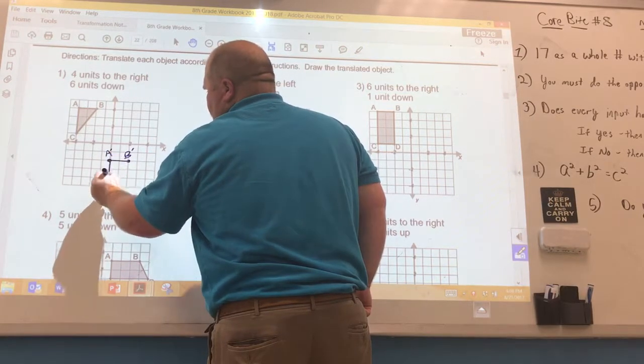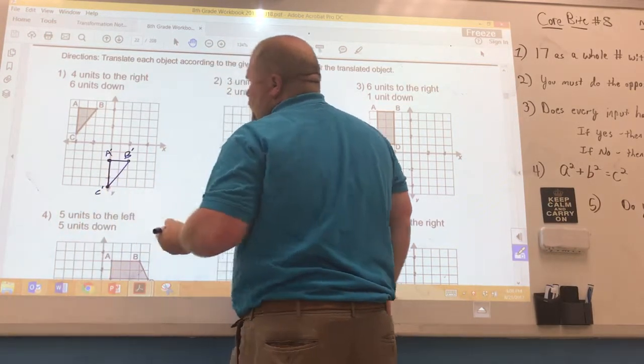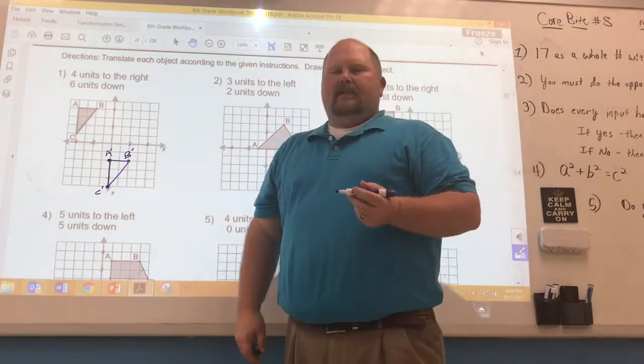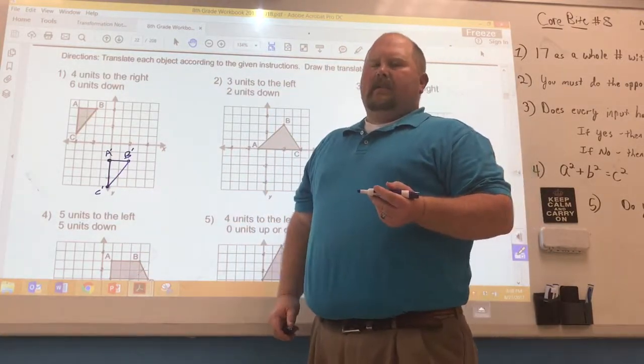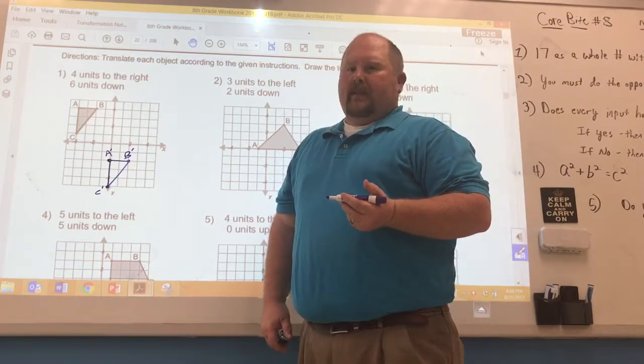And now you can connect the dots together to make a congruent triangle. It's identical to the original. It's in the same orientation. Everything's the same except for it's been moved four units to the right and six units down.